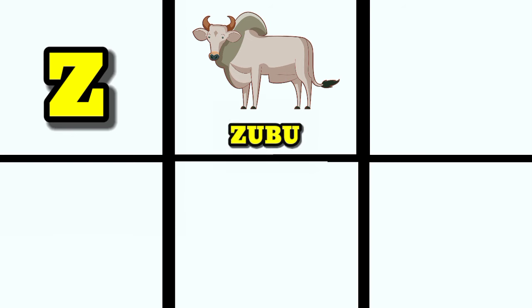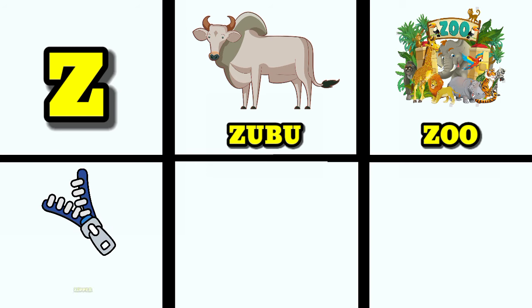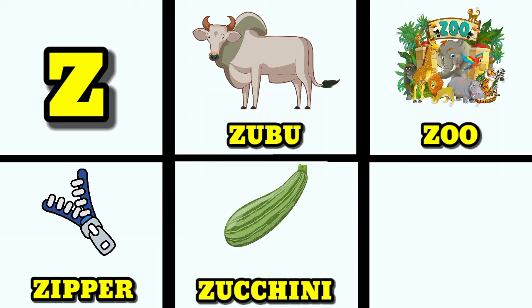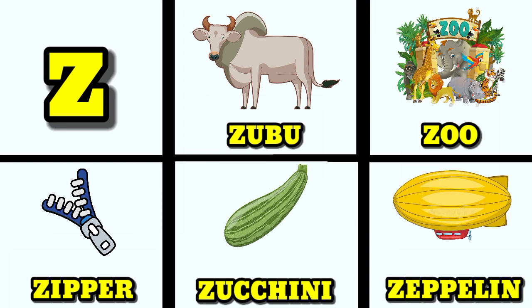Z is for zebu. Z is for zoo. Z is for zipper. Z is for zookino. Z is for zeppelin.